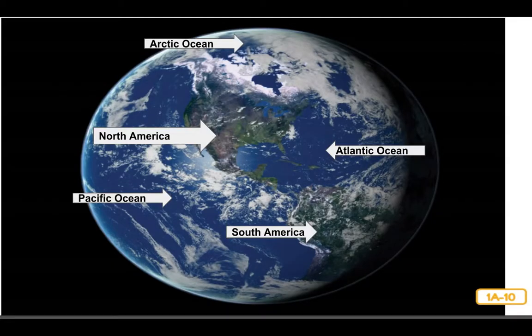Earth is sphere-shaped like a ball and it is surrounded by a thick blanket of air called an atmosphere where clouds float around. Most of the earth's surface is covered with water in the form of five oceans: Pacific, Atlantic, Indian, Arctic, and Southern or Antarctic. And between these oceans, there is land in the form of seven continents: North America, South America, Europe, Africa, Asia, Australia, and Antarctica.